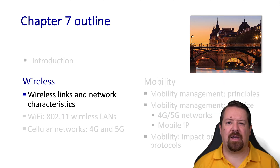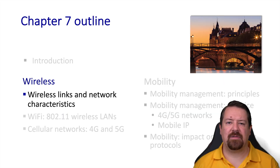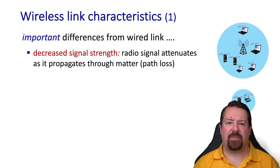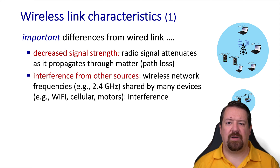Now let's look at how wireless links compare to wired links. One important difference is the effect of attenuation on wireless signals. While wired signals certainly attenuate, it happens at a much lower rate than in the wireless environment. In addition, wireless signals are dramatically affected by propagating through solid objects like buildings, as compared to propagating through air.